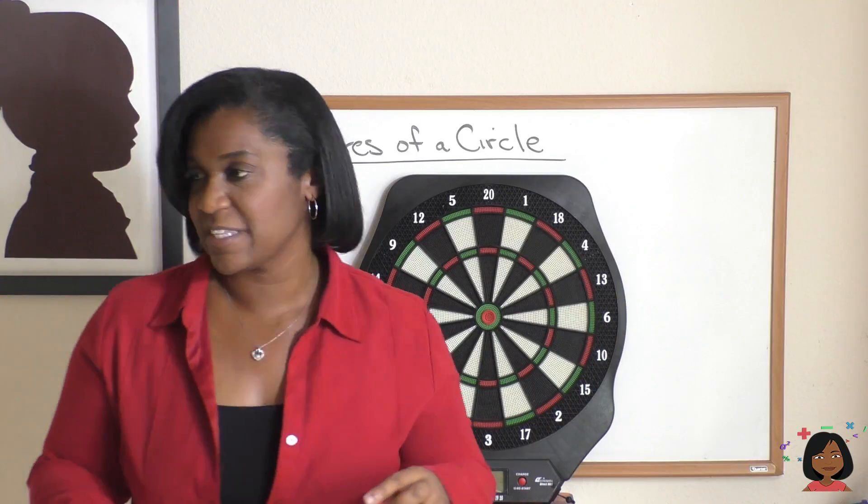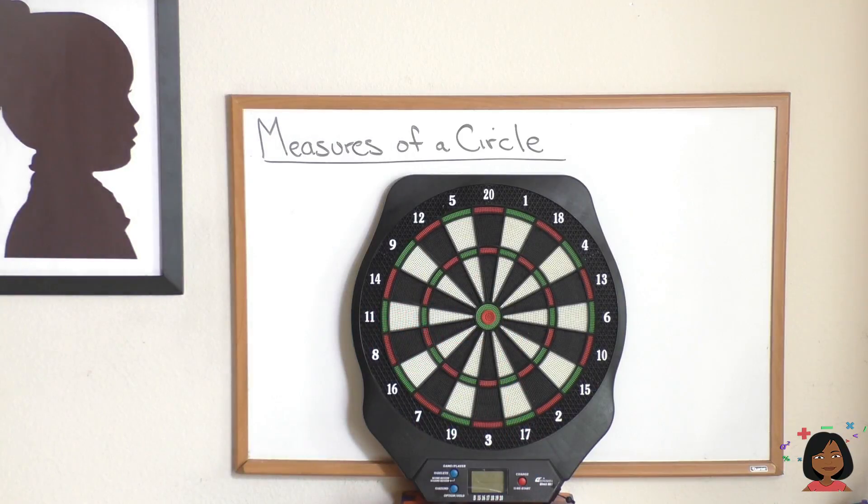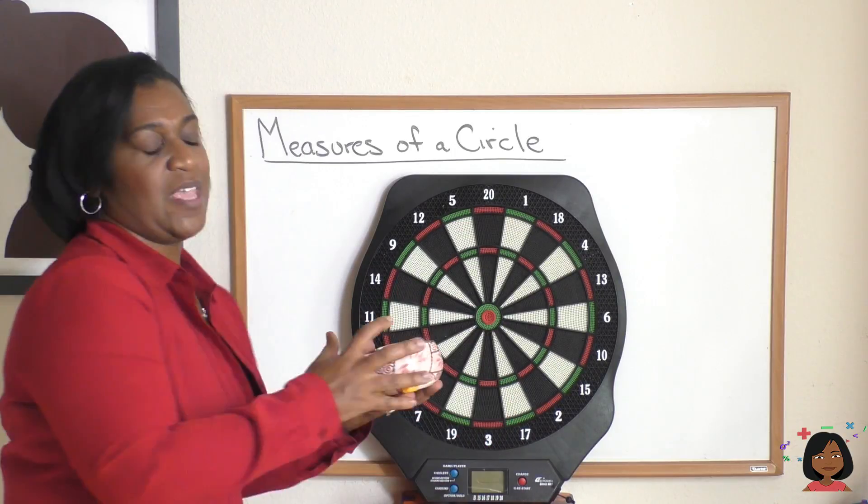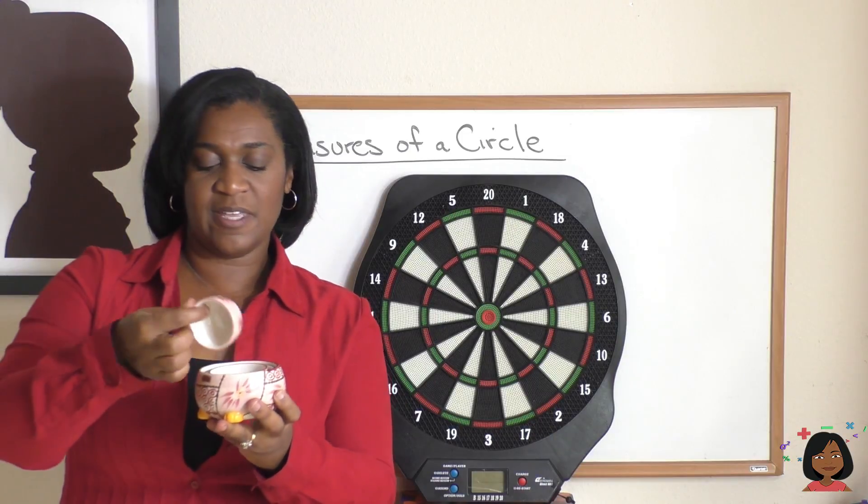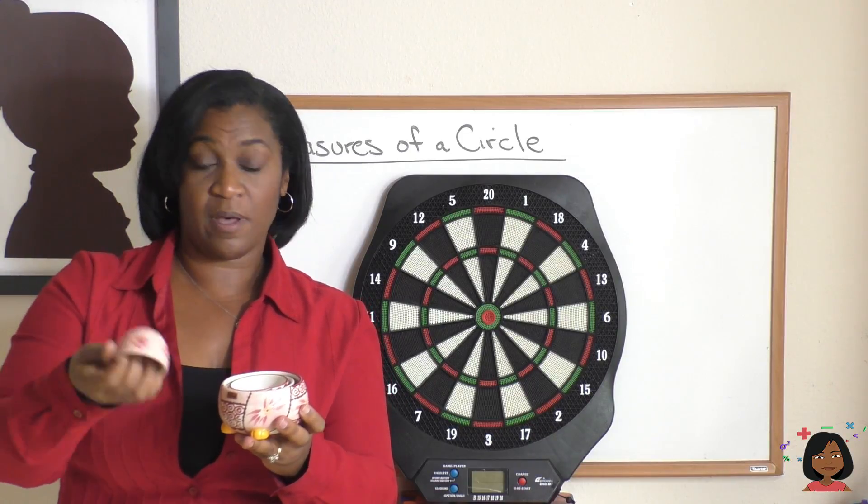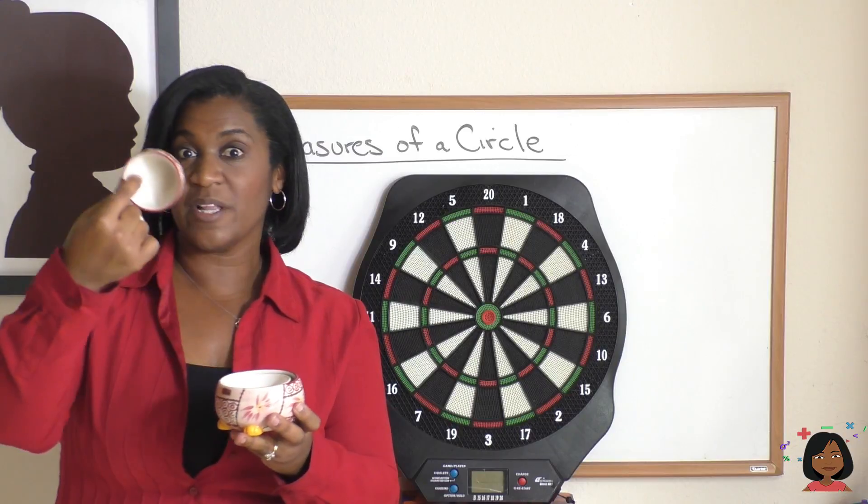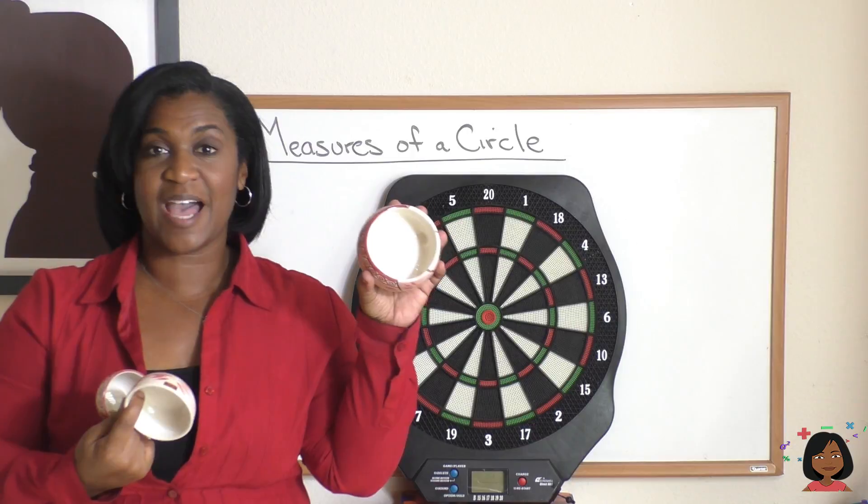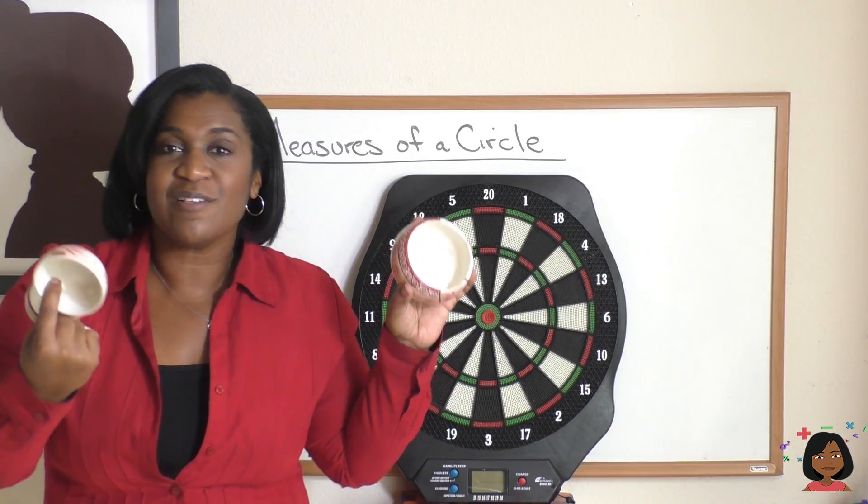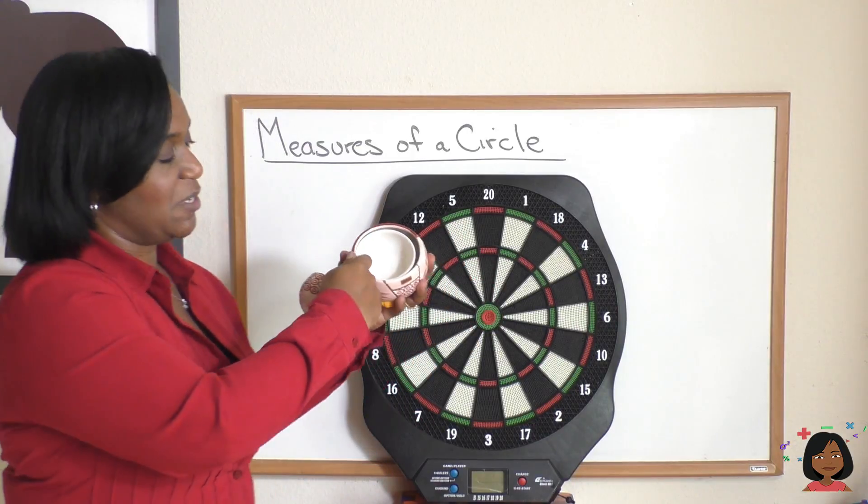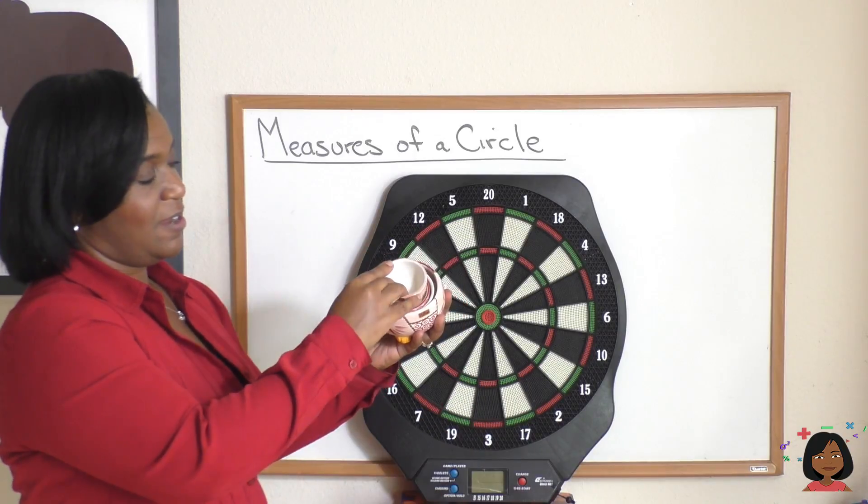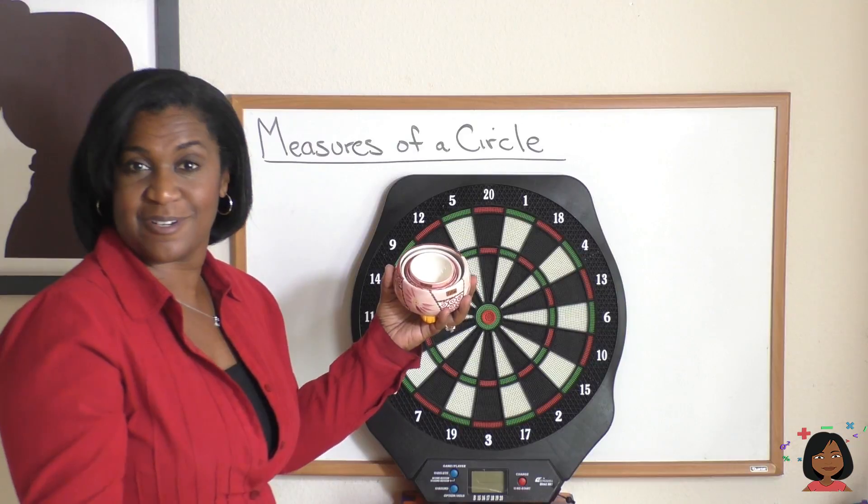Oh, I have another example I wanted to show you. Hold on one second. So this is my measuring cups for my kitchen. And you know, one of these is a quarter cup, one fourth of a cup. One is a third of a cup. This one is a half of a cup. And this one is a cup. And these are also concentric circles because you can see they fit right down inside of each other and with different radiuses and diameters.